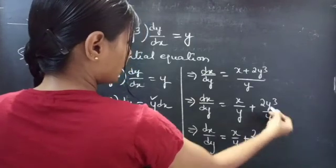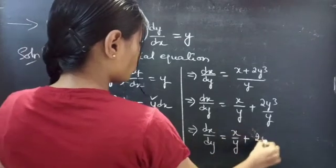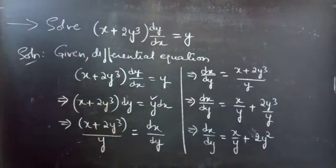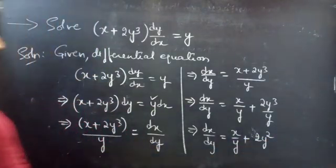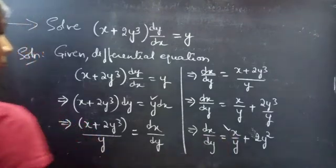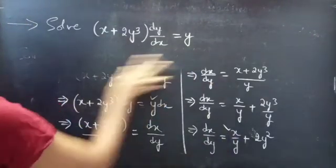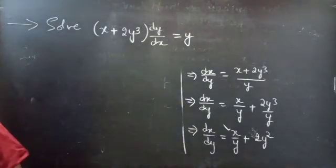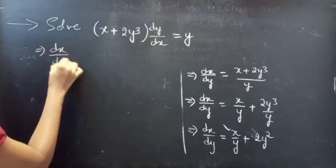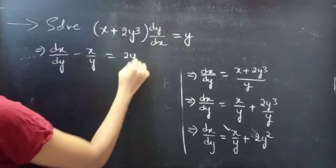One y gets cancelled from the numerator and the denominator, giving dx/dy = x/y + 2y². Now take the term involving x to the LHS. We get dx/dy − x/y = 2y².